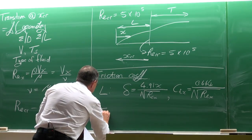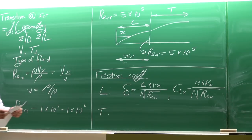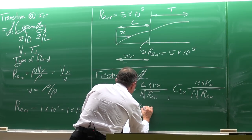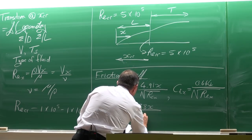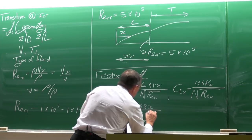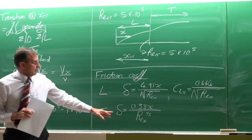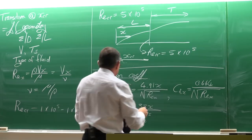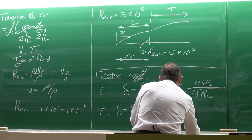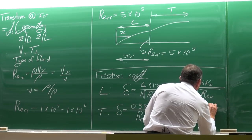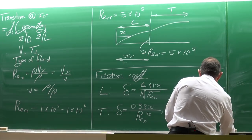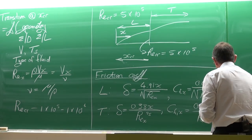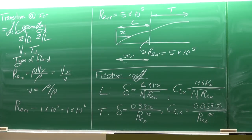For turbulent flow, the boundary layer thickness equals 0.38x divided by Re_x to the power of one-fifth, and the local friction coefficient C_Fx equals 0.059 divided by Re_x to the power of one-fifth.